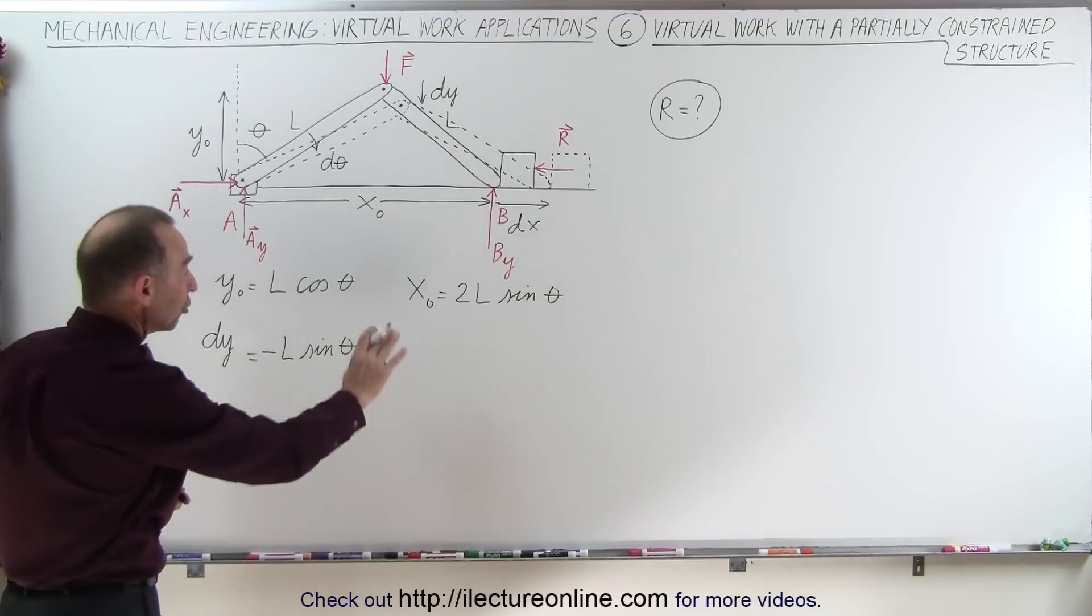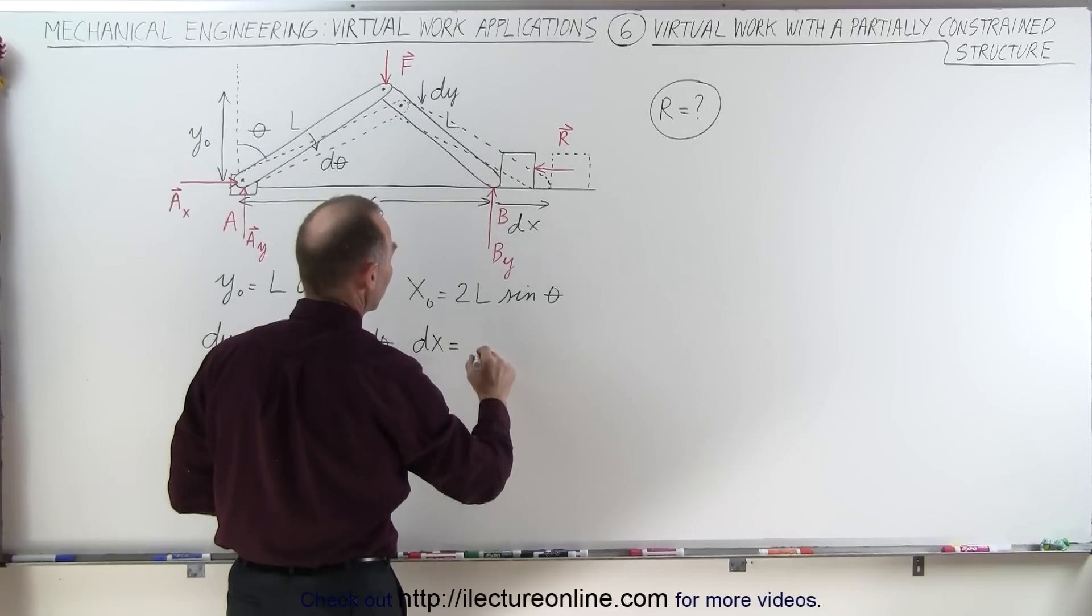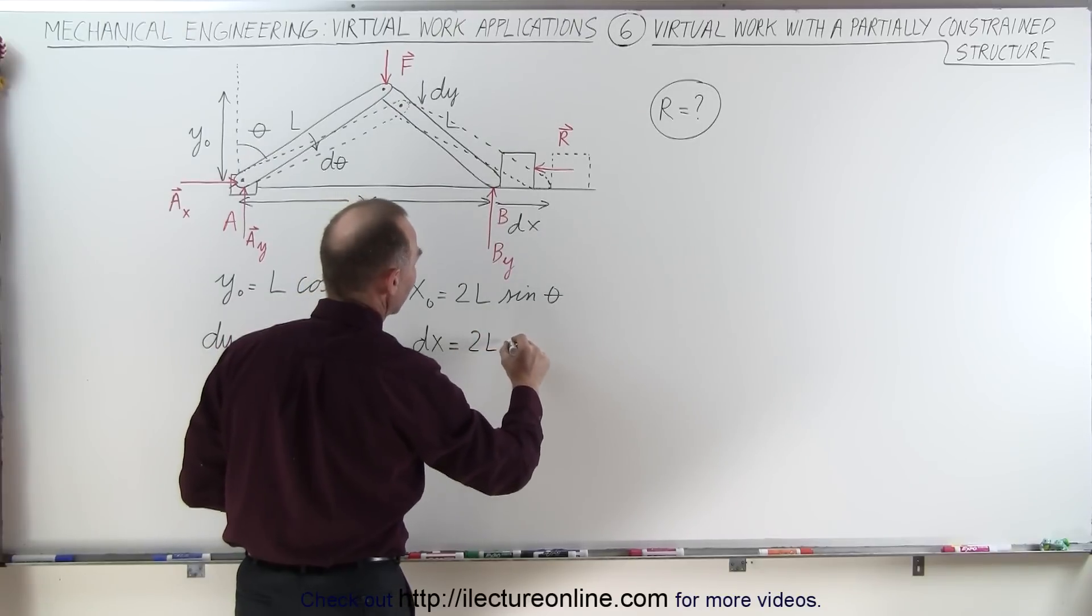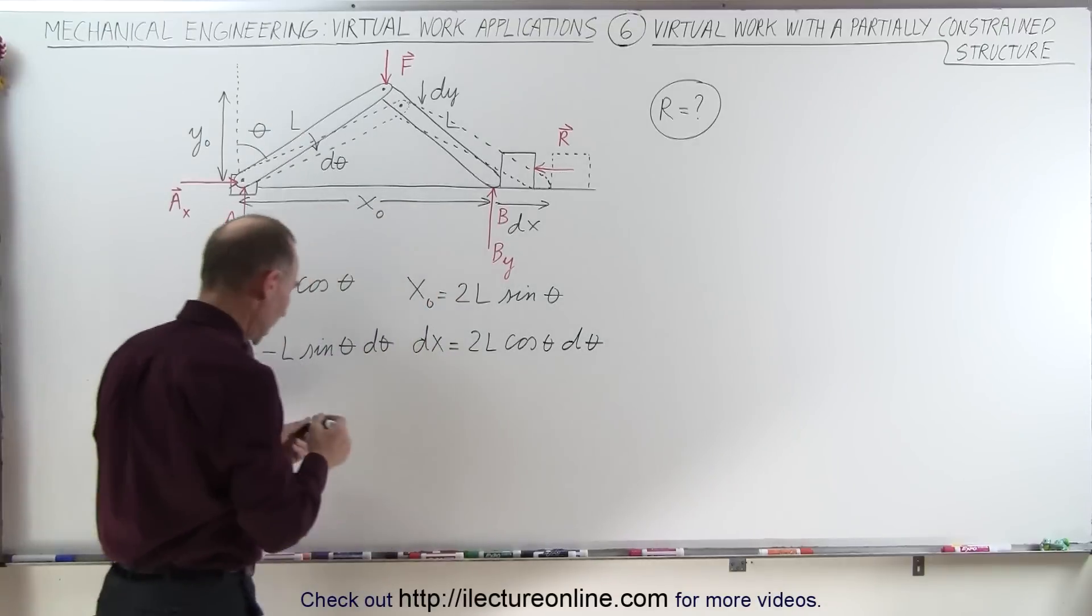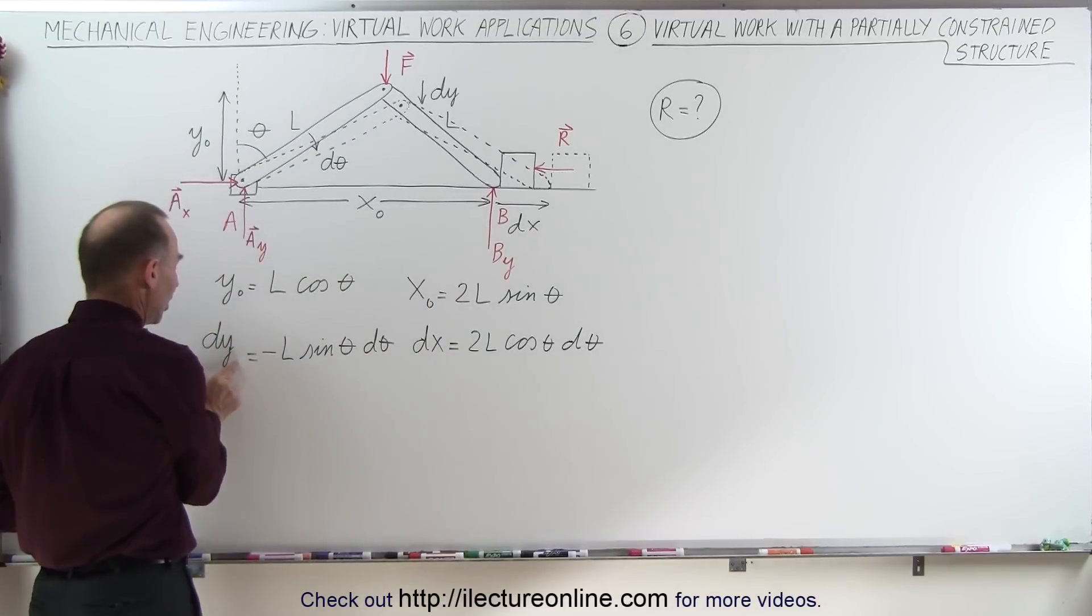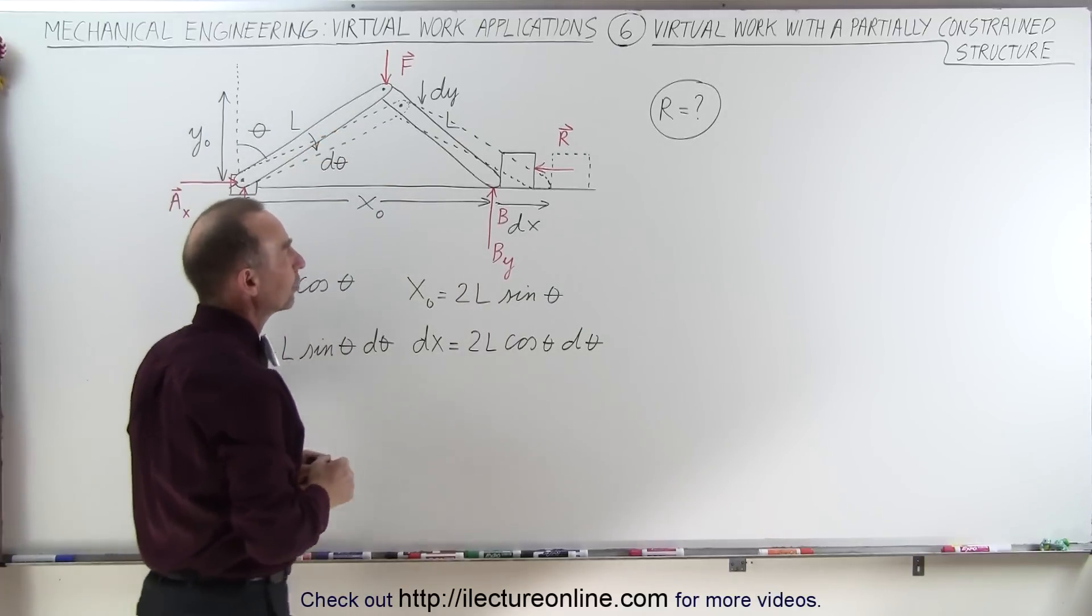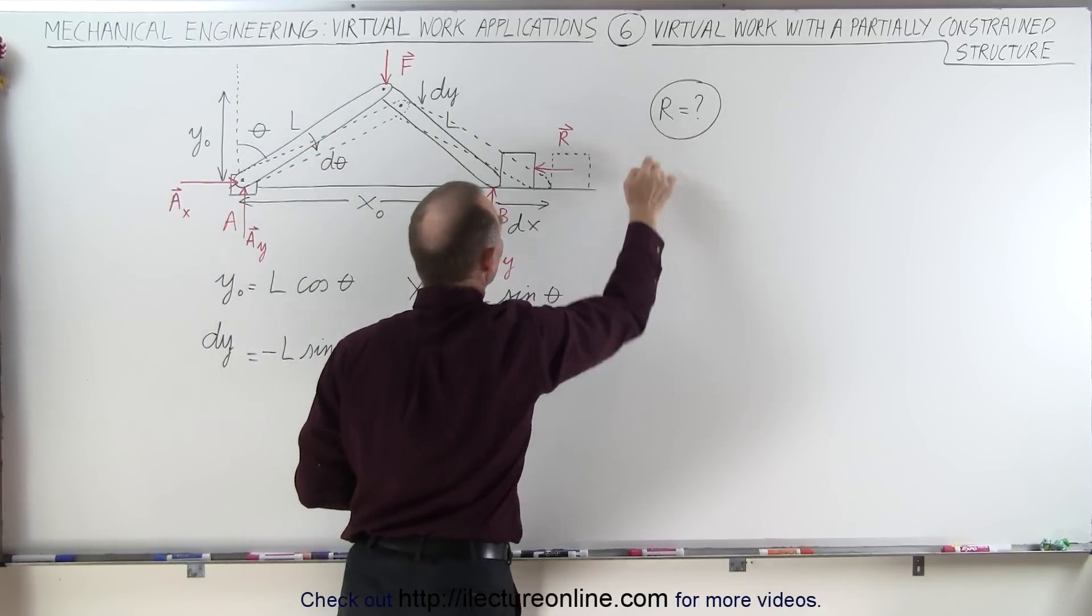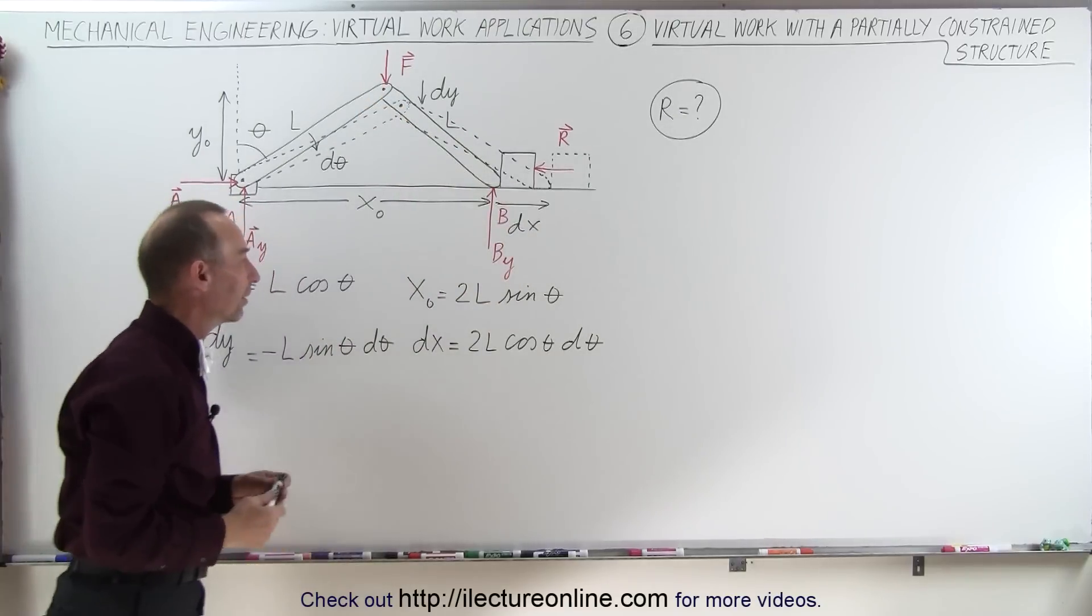We can do the same with the change in X. dx can be defined as being the derivative of this, which would be 2L times the cosine of theta d theta. So now we have defined the change in Y and the change in X in terms of the change in the angle. We're now going to try to find R in terms of how much the angle changes and the force F applied at the top.